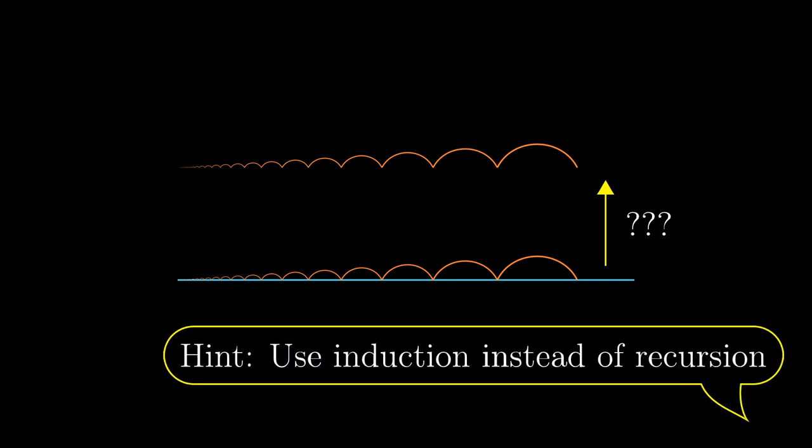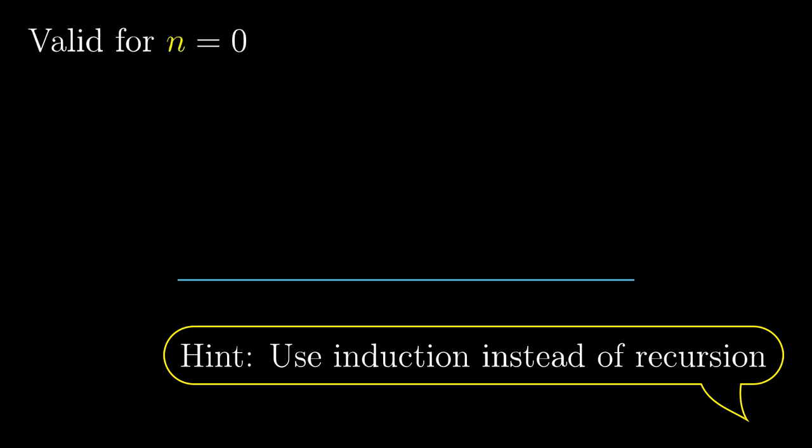Instead of recursion, we use induction. Induction is a proof technique working as follows: we prove that the statement is true for n equals 0, and if the statement is true for some natural number n, it is also true for n plus 1. When this is done, we can deduce that the statement is true for all the natural numbers.